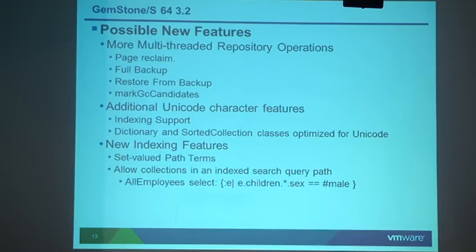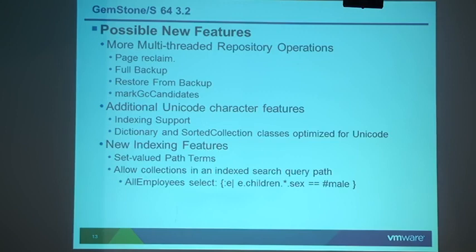We're going to finish multi-threading some of the remaining repository operations. We've got most of those done in 3.0 and 3.1, including repository-wide garbage collection. There are only a few left: some page reclaim operations, full backup and full restore, and a GC operation called Mark GC Candidates. Once those four are done, everything that has to walk the entire repository will be multi-threaded.